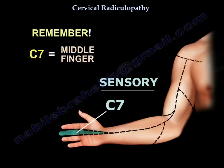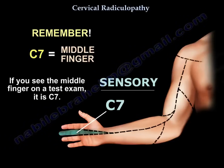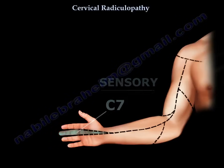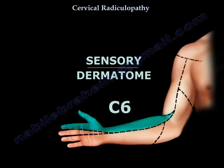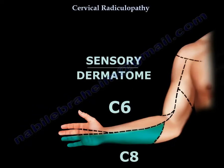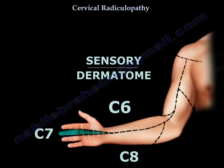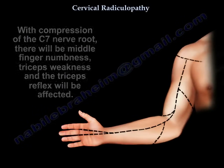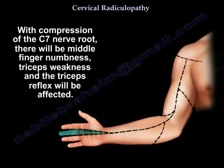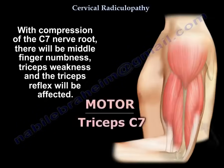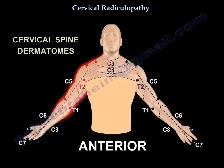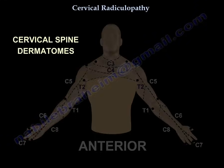C7 is the middle finger — remember that for exam purposes. Going one way on the fingers is C6, and going the other way is C8. If you have C7 nerve root involvement, you will get middle finger numbness, triceps weakness, and the triceps reflex will be affected. This is an easy way to remember the dermatomes and muscle function.